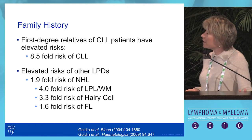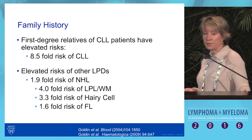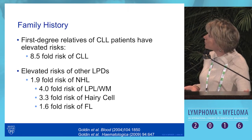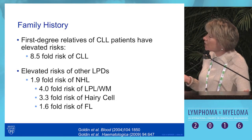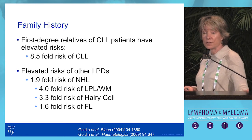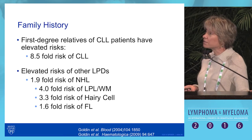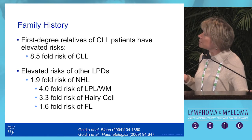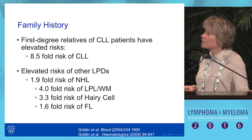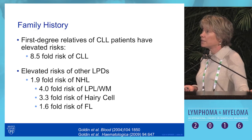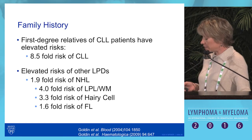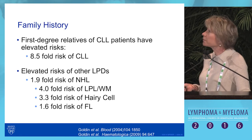Diving into subtypes, there's a 4-fold increased risk of Waldenström's, 3.3-fold for hairy cell, and 1.6-fold for follicular lymphoma among first-degree relatives of CLL patients.